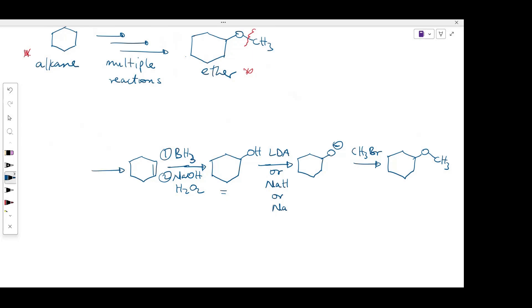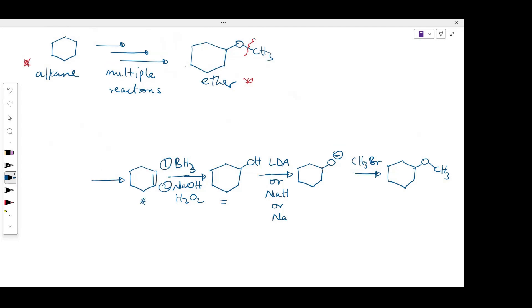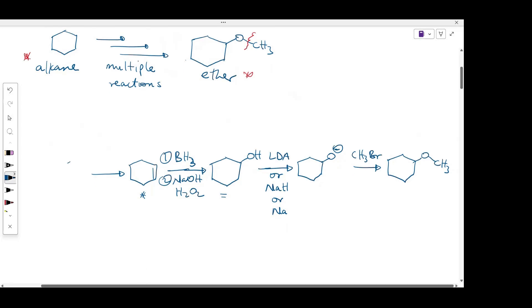So the next question then becomes, how can we make this alkene? From the reactions that we've learned so far, we know that alkenes are usually products of elimination. And in doing elimination reactions, usually you convert an alkyl halide to alkene. So how can I convert the alkyl halide to the alkene?